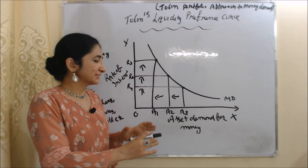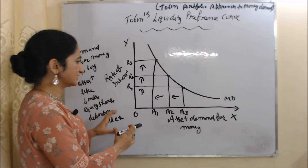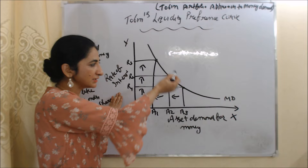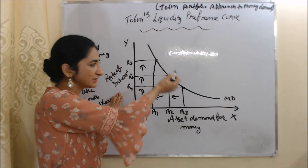In this diagram, on the x-axis we have asset demand for money and on the y-axis we have interest rate. As interest rate increases, asset demand for money reduces. When we join all these points, we get a downward-sloping curve called Tobin's liquidity preference curve. And that is all about Tobin's portfolio approach to demand for money. Thank you so much for watching this video. Take care.